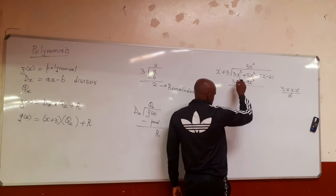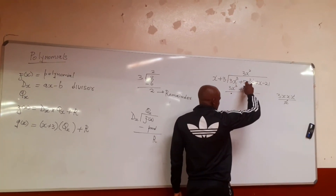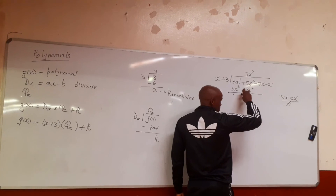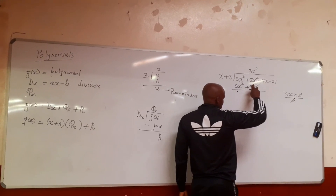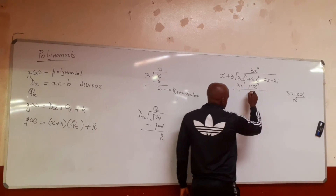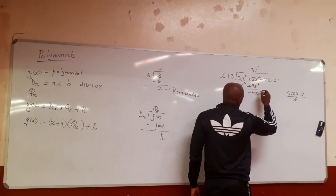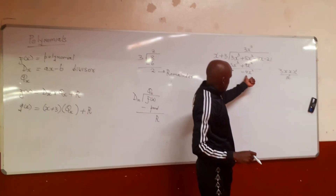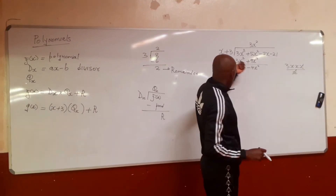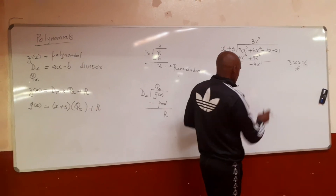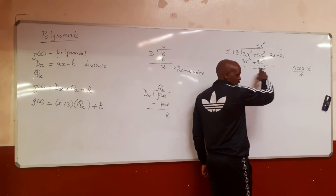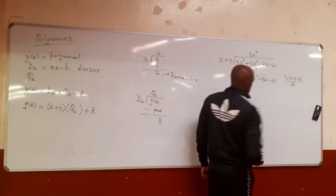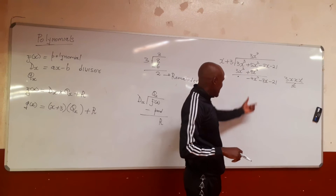3x² minus 3x² equals zero. Then 5x² minus 9x² equals minus 4x². The remainder still contains x, so we drop down everything: minus 7x minus 21. We divide again until there is no x. Minus 4x² divided by x gives minus 4x.